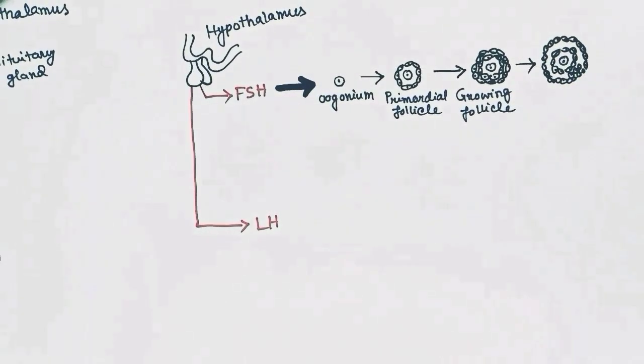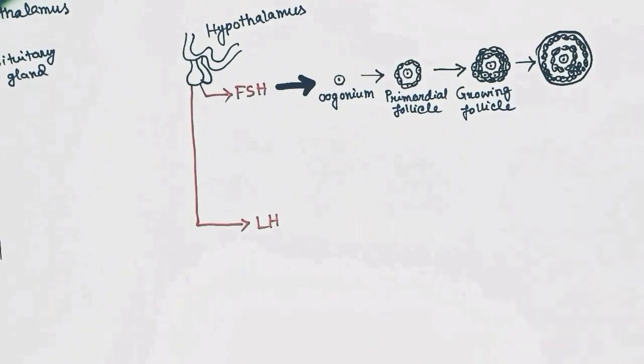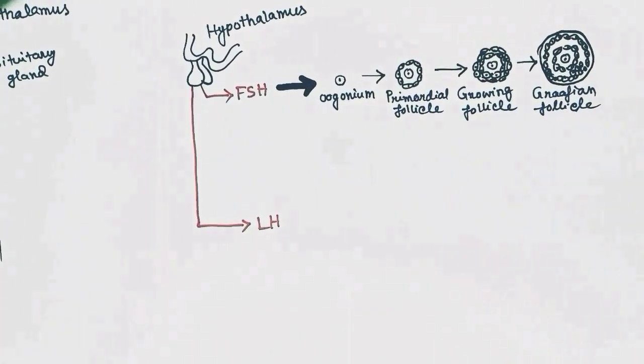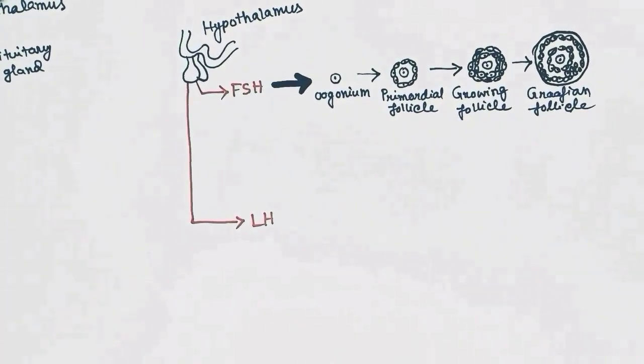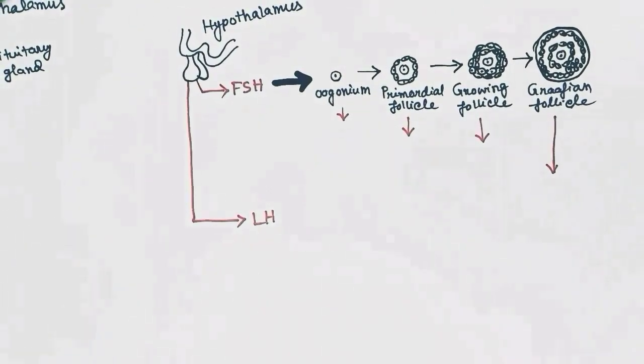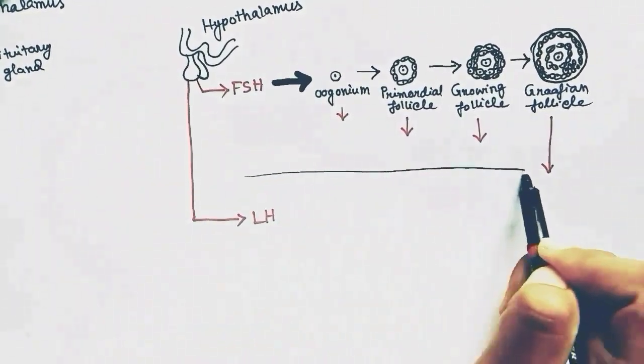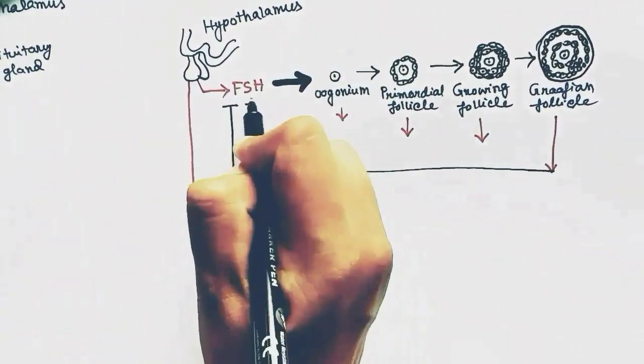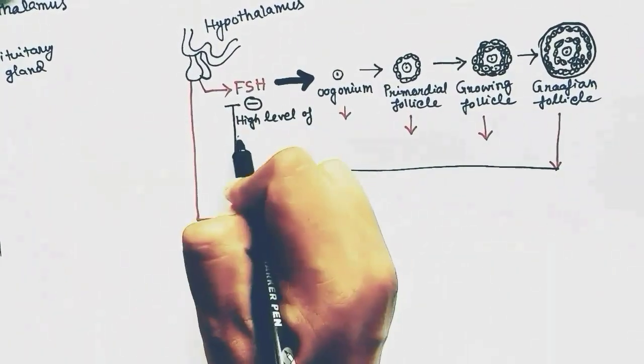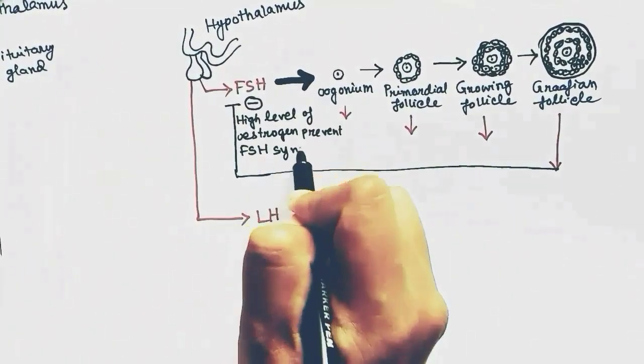Now, with the development of follicles, it releases a certain amount of estrogen. More developed follicle releases more estrogen. When estrogen level gets high, it has a negative impact on FSH release.